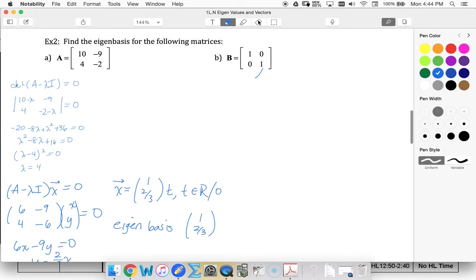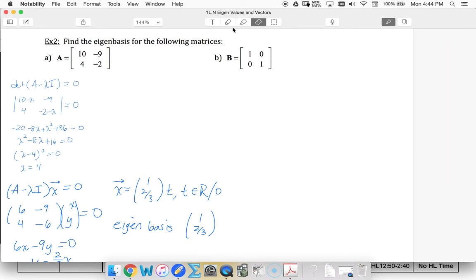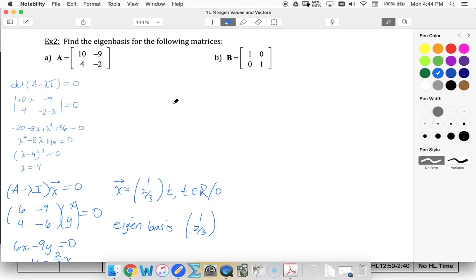Now we're looking for the eigenbasis for our identity matrix. So starting off the same way, we're going to go through this and I'm going to tell you that our lambda value ends up being 1. For this value of lambda, I would end up with the 0 matrix.